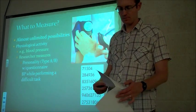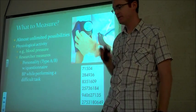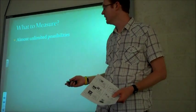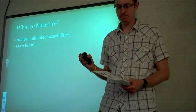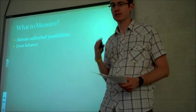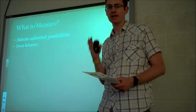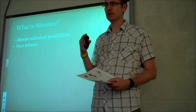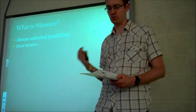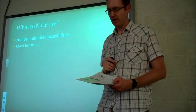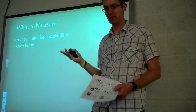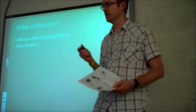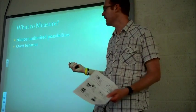Another very popular type of thing to measure is overt behavior. When we say something is overt, we mean it's open to view — you can look at somebody and see how they're acting. Let's say you want to study moral behavior and how it changes depending on certain situational factors. There's a classic line of social psychology research that looks at exactly that. An example of an overt behavior related to morality would be stealing.